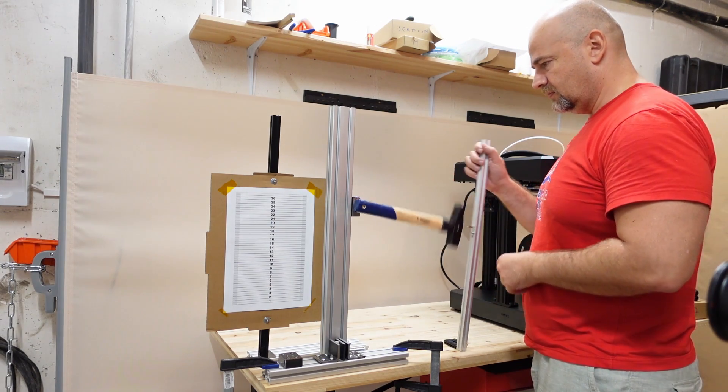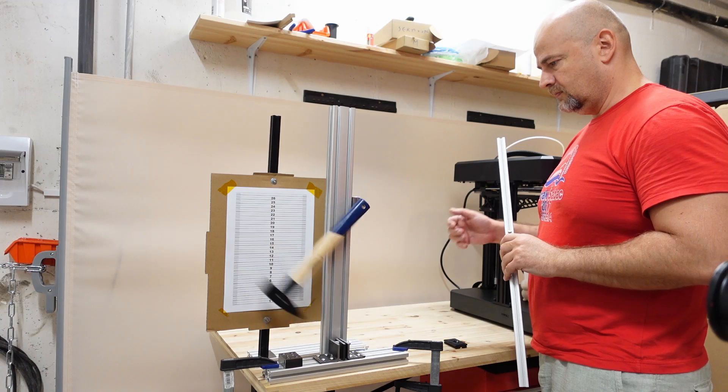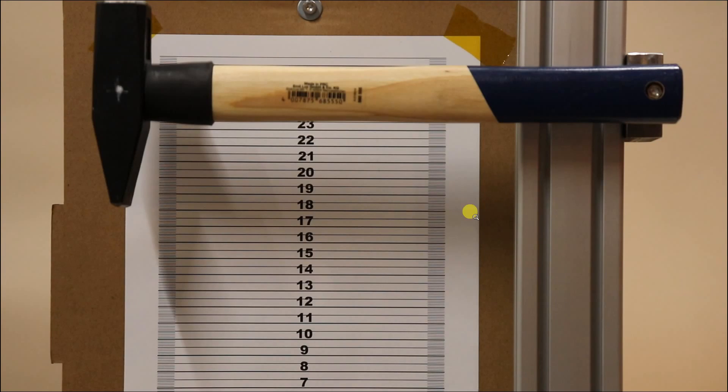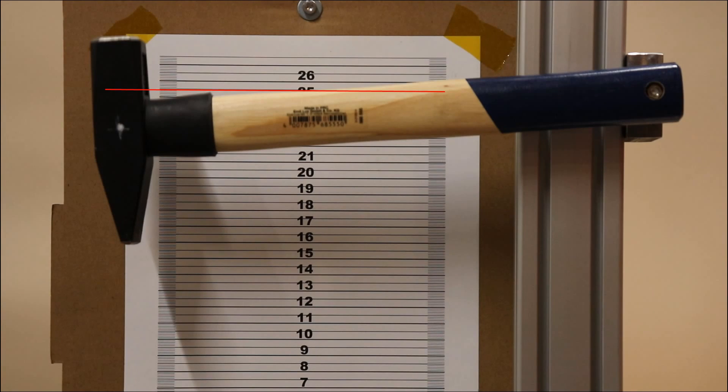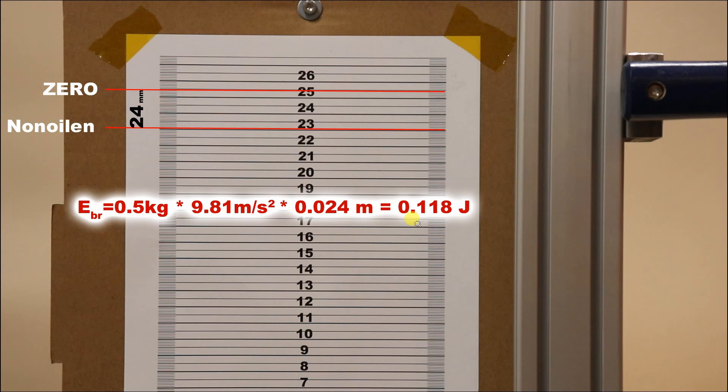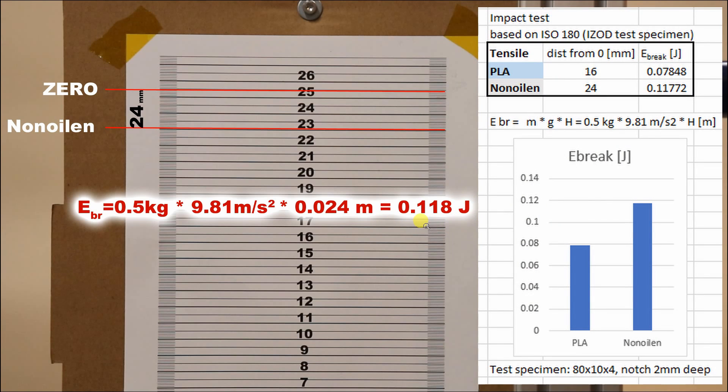And the zero position. So this is my scale and this is the position of the hammer on the zero position. This is the position of the hammer after breaking the non-oilium test specimen. And distance between these two lines is 24 millimeters, and if I use this equation I can calculate the energy in joules which is used to break the test object. And compared with regular PLA, non-oilium is less brittle material.